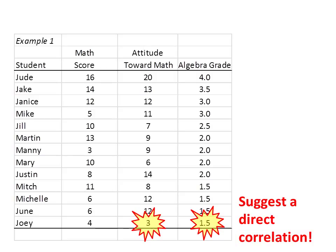If we look at Joey, this is a huge contrast to Jude. Joey has the lowest algebra grade of 1.5, and he also has the lowest attitude toward math score of 3. When high scores on one variable are associated with high scores on the other, and low scores on one variable are associated with low scores on the other, we know that the relationship is positive or direct.